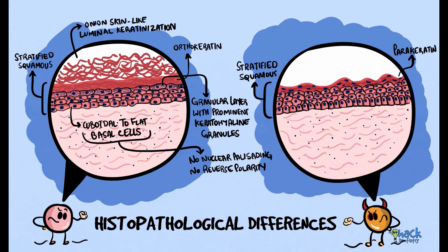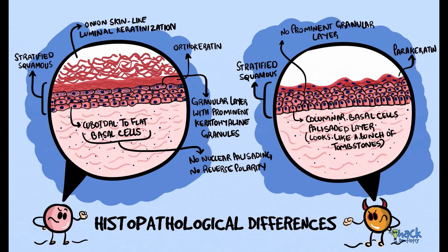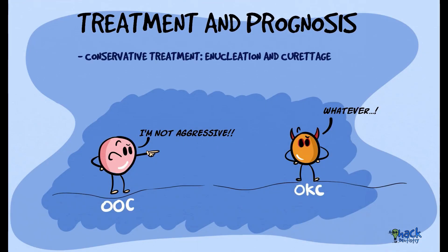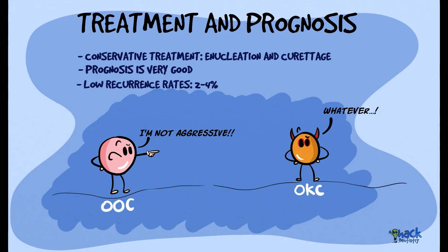On the other hand, odontogenic keratocyst does not have a prominent granular layer and has cuboidal to columnar basal cells with nuclei oriented away from the basement membrane. Ortho-keratinized odontogenic cyst is not an aggressive lesion and is usually treated conservatively by enucleation and curettage. The prognosis for this lesion is very good, with low recurrence rates of 2–4%. Ortho-keratinized odontogenic cysts have not been reported to be associated with nevoid basal cell carcinoma syndrome or Gorlin syndrome.